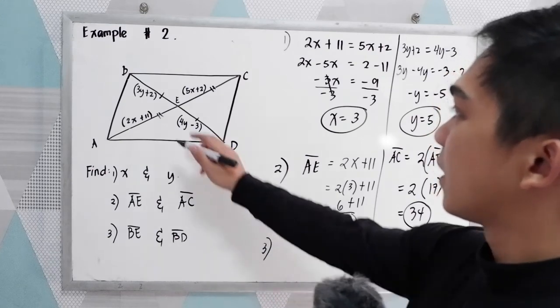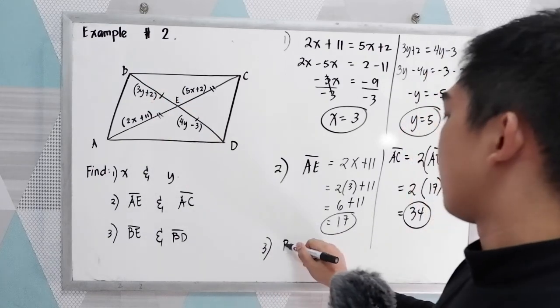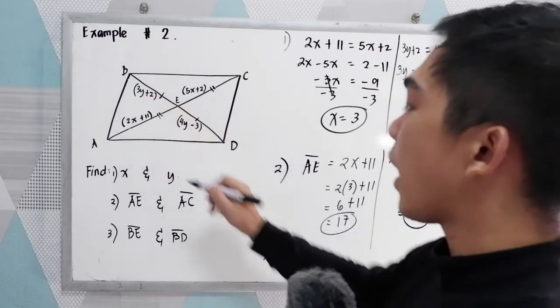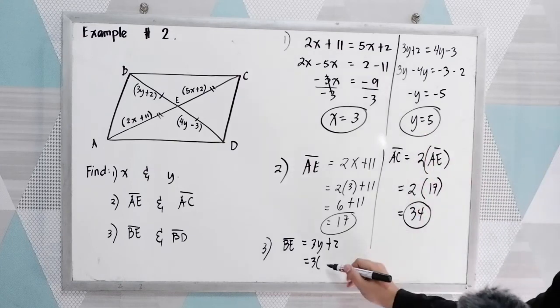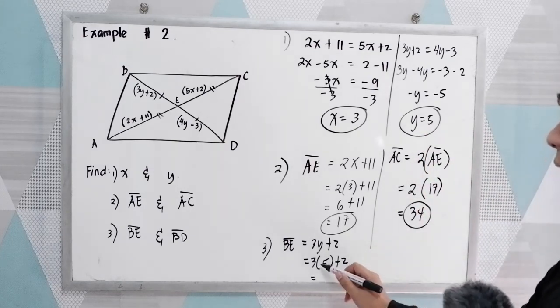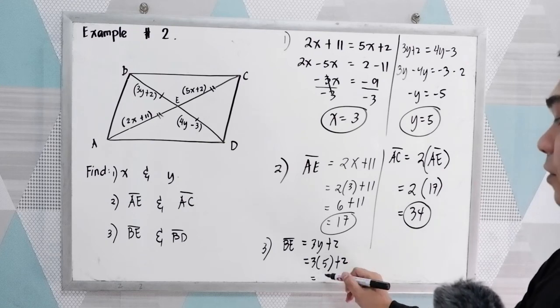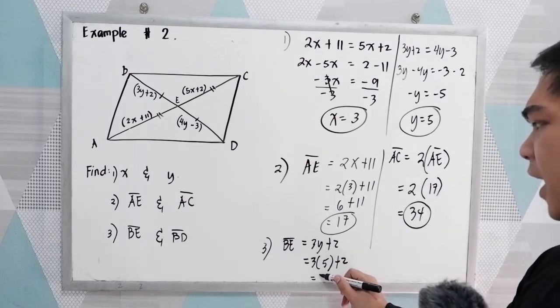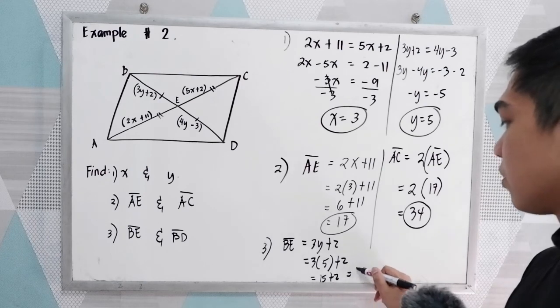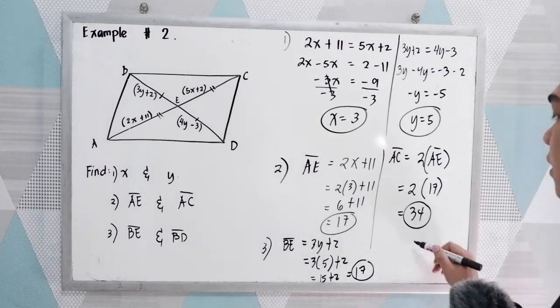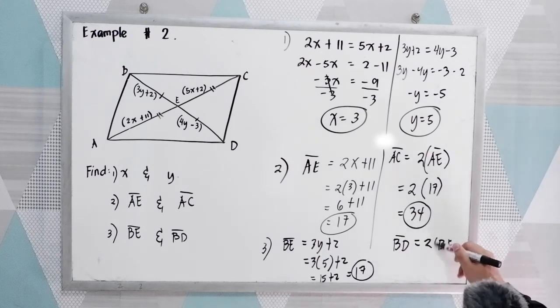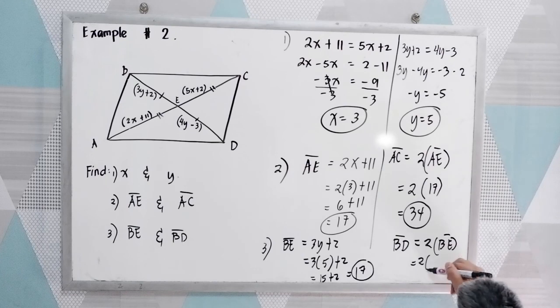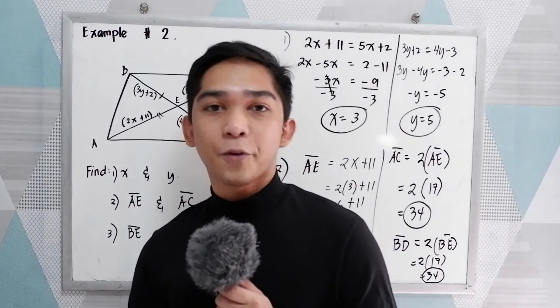Number 3, BE. BE is 3y plus 2. So 3 times our y is 5 plus 2, so we have 3y. 3 times 5, we have 15 plus 2, so 17. And BD is twice BE. So 2 times 17, that is 34. So that is our property number 5.